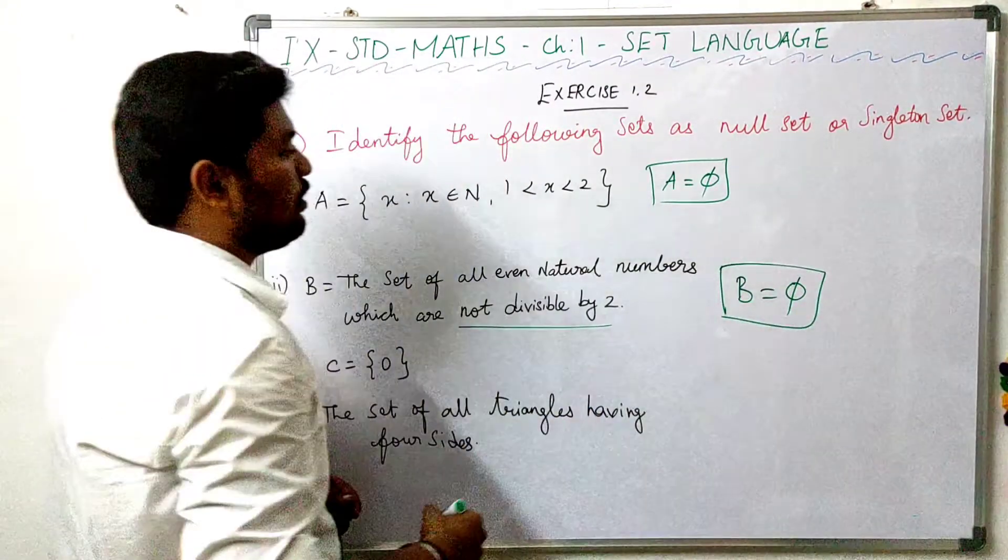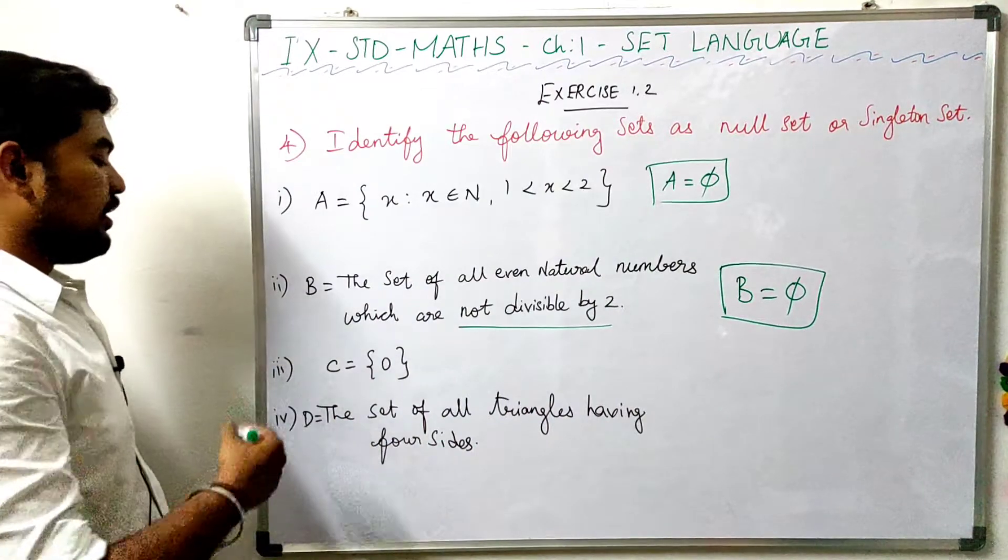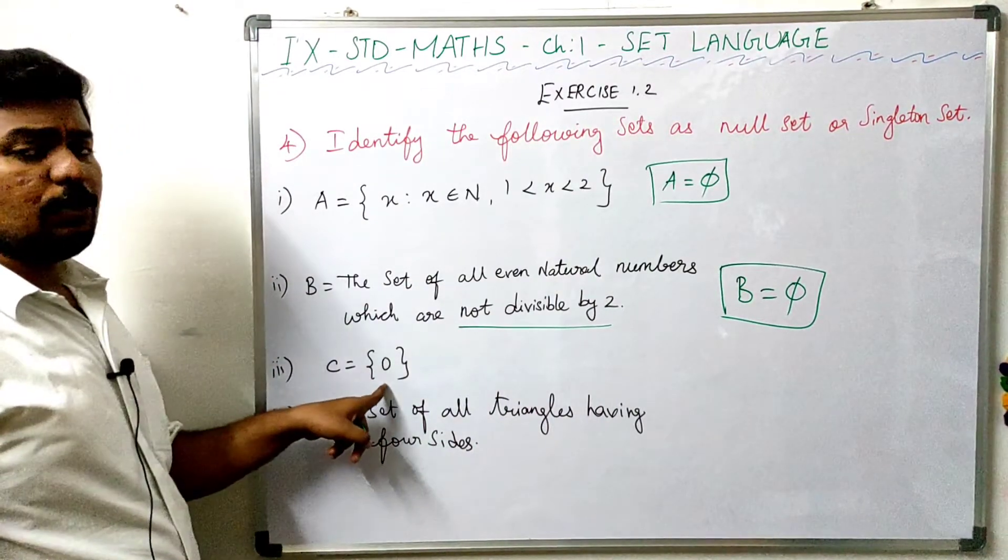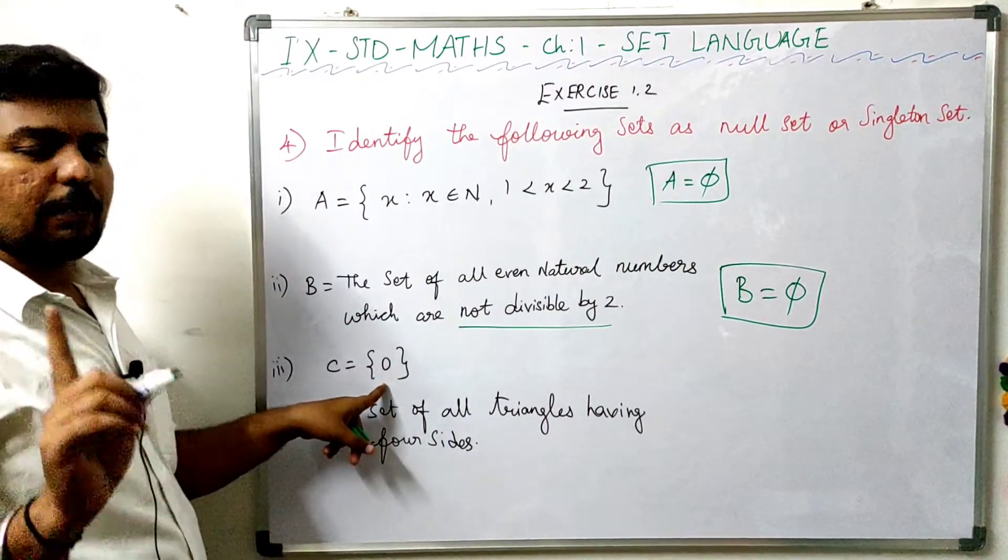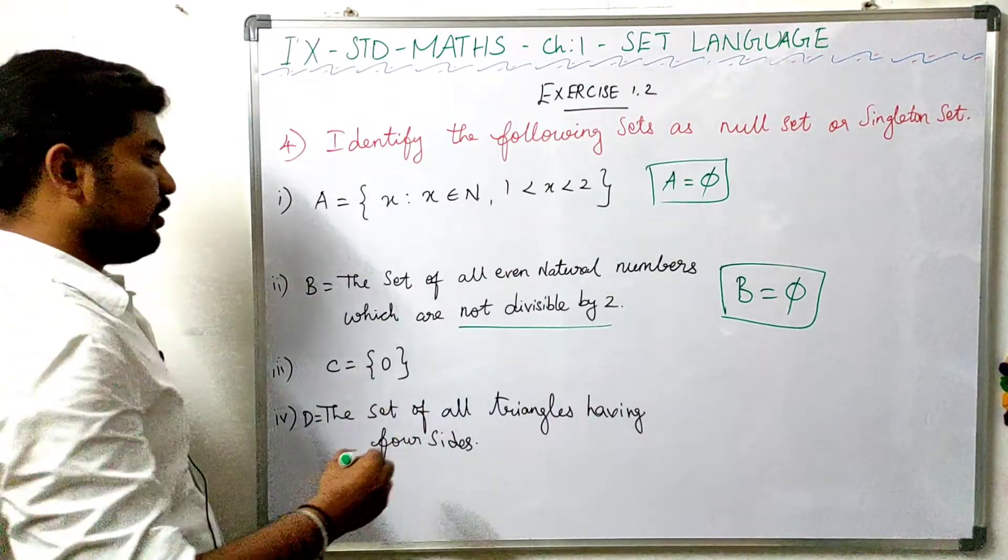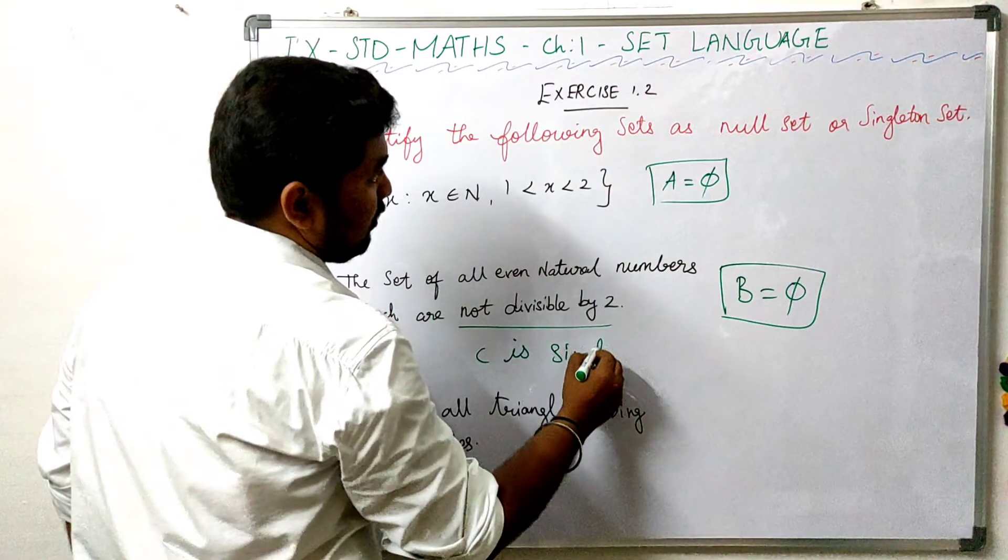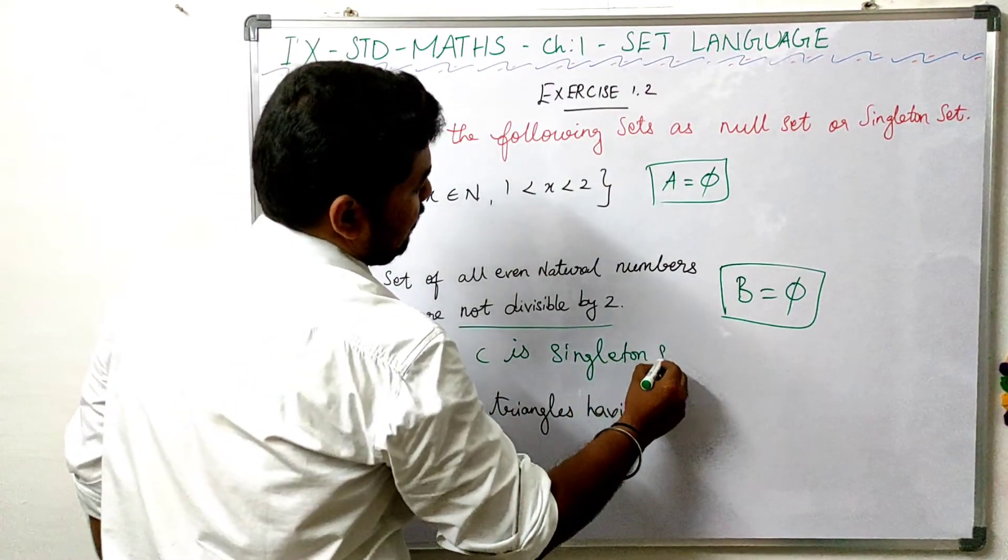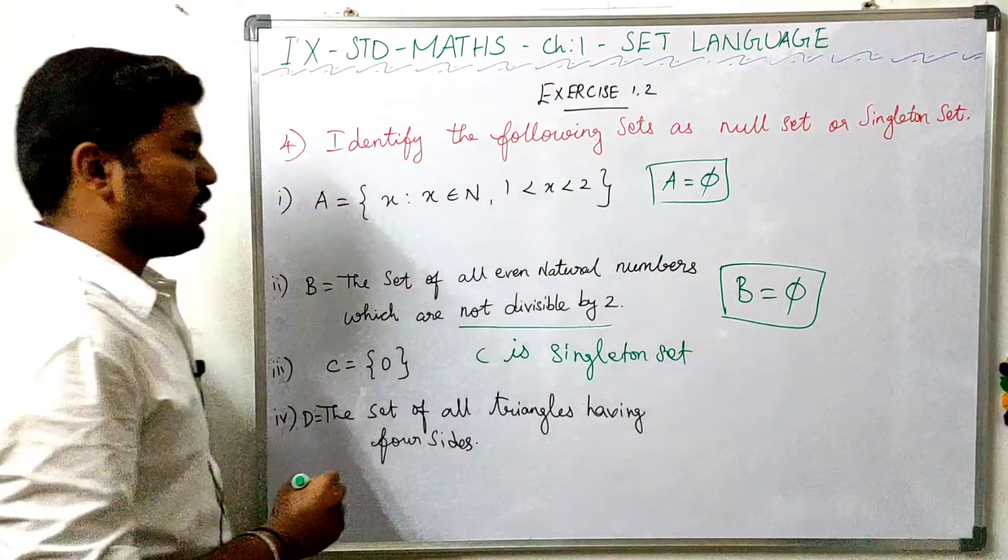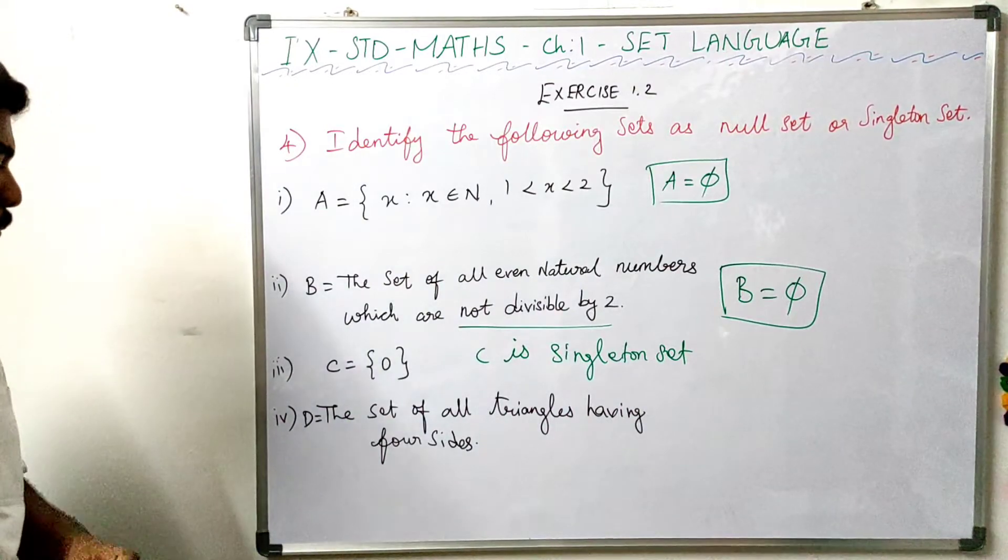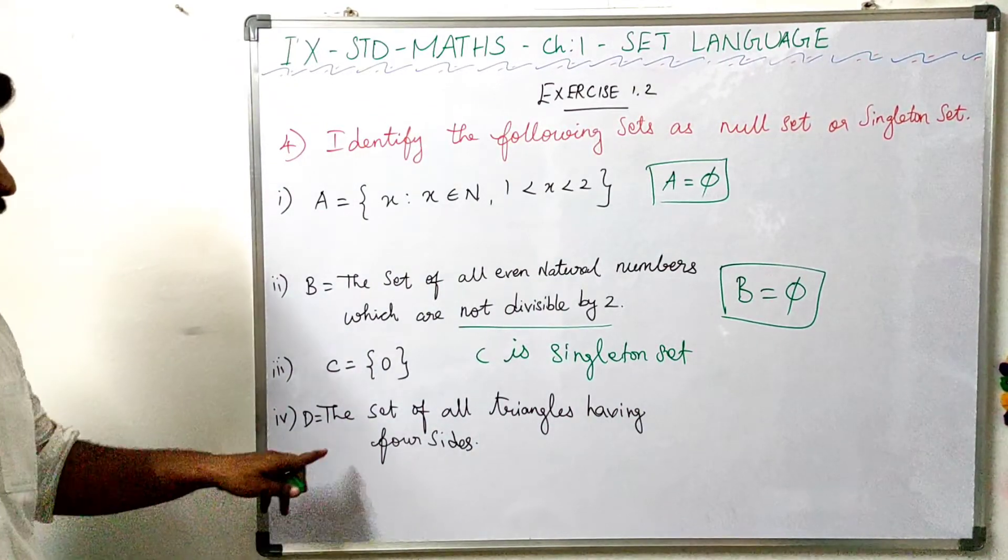Set C is equal to 0. Set C equals the set containing just 0. This is a singleton set with one element.